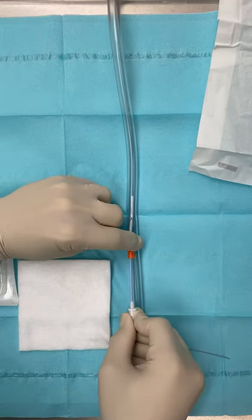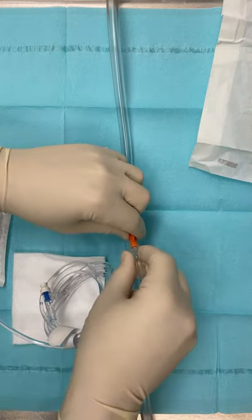Thread off the rapid infusion catheter while removing the dilator. Now connect your line and you can transfuse up to 750 milliliters of fluid per minute.